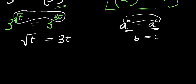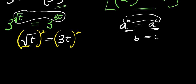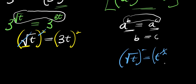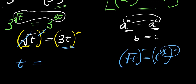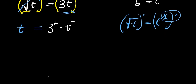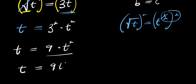The next thing we are going to do will be to eliminate the square root by squaring both sides of this equation. The square root of t is just like writing t to the power of 1 over 2. When you raise it to the power of 2, 1 over 2 multiplied by 2 gives 2 over 2, which is 1, so we get t. On the right side, we distribute the exponent: 3 squared times t squared, giving us 9t squared. So we have t equals 9t squared.